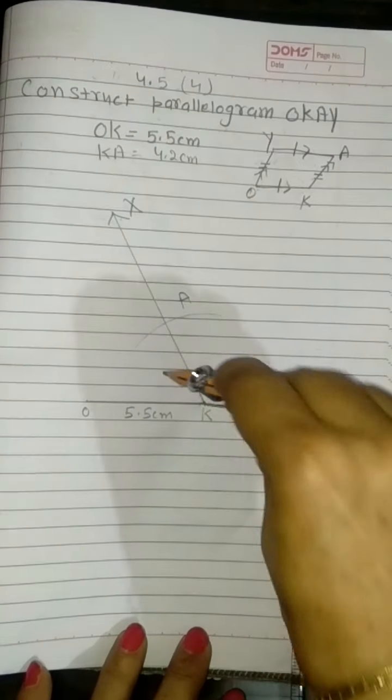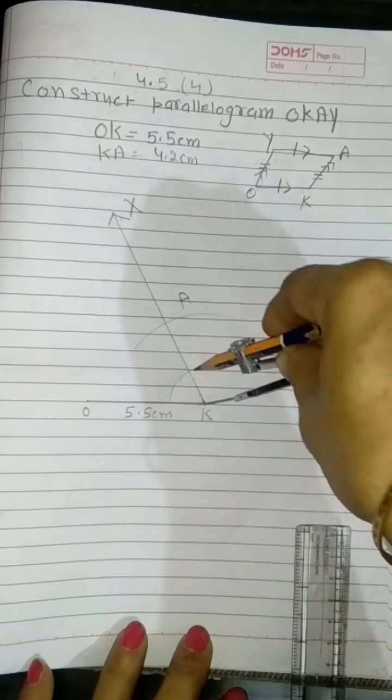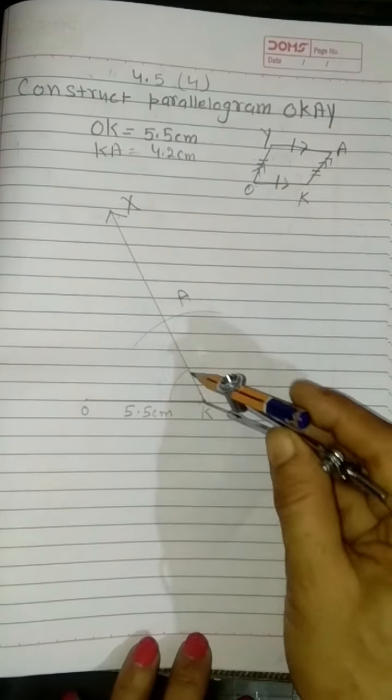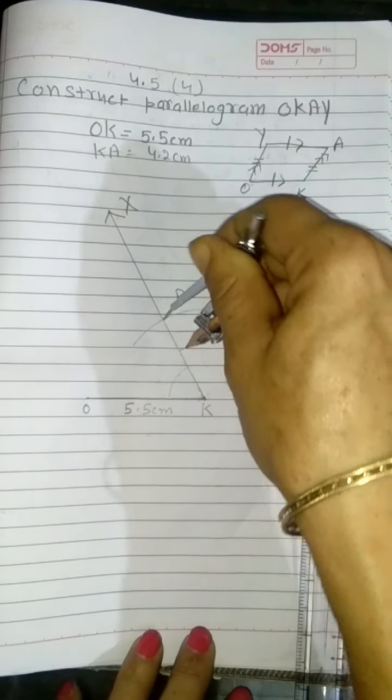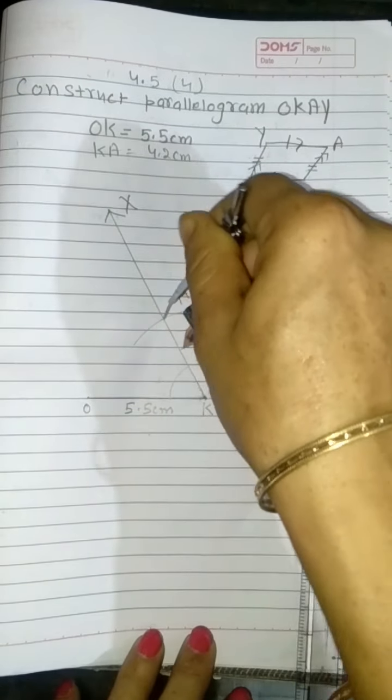Suppose you have given here this angle. I will draw here the copy of this angle but on the opposite side. Why opposite side? I will use the properties of parallel lines.